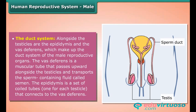Testosterone also stimulates the production of sperm. The duct system: alongside the testicles are the epididymis and the vas deferens, which make up the duct system of the male reproductive organs. The vas deferens is a muscular tube that passes upward alongside the testicles and transports the sperm-containing fluid called semen.